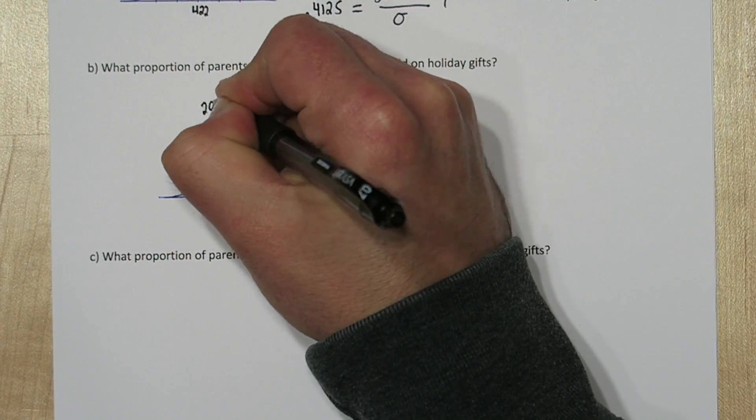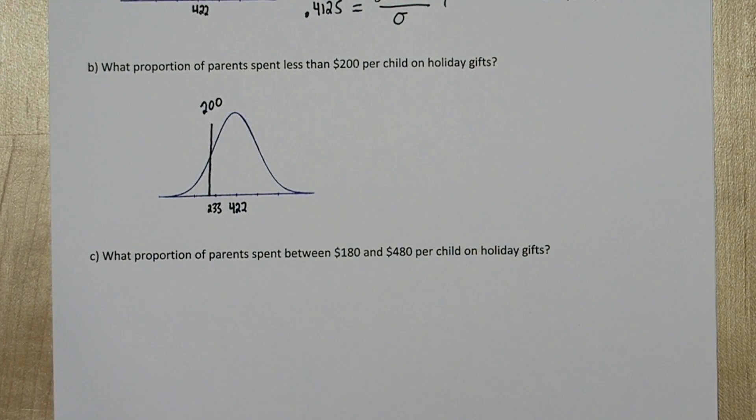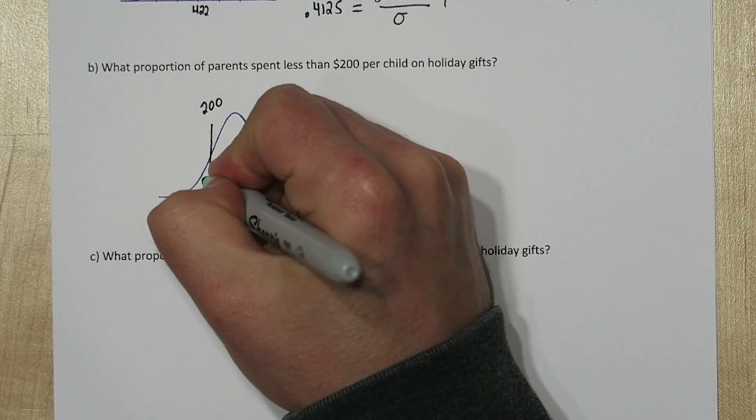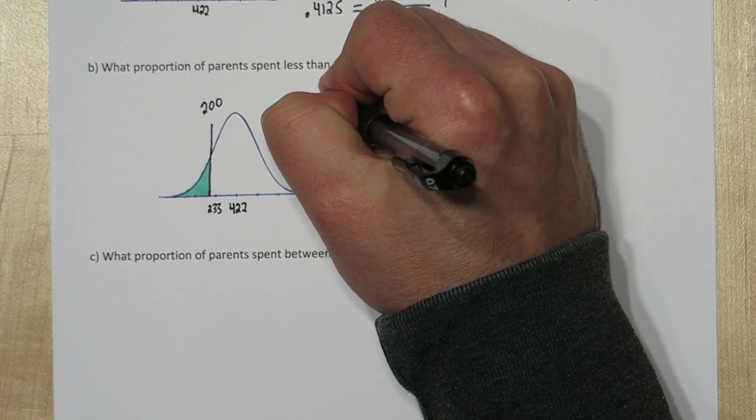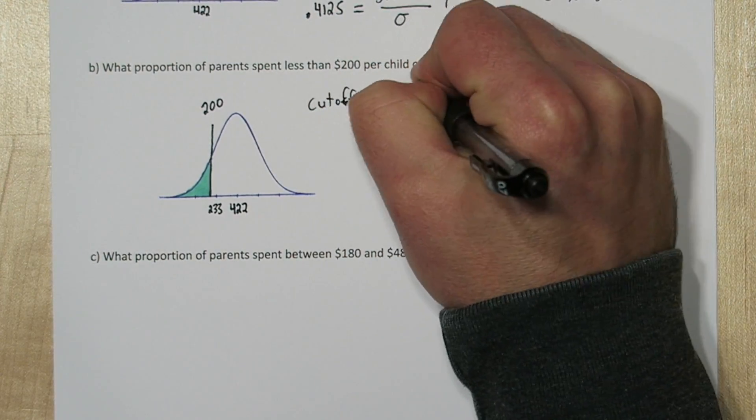So the area under the entire curve is 1. And we're trying to figure out what this area is. The area to the left of $200. That's the proportion of parents that spent less than $200 per child on holiday gifts.